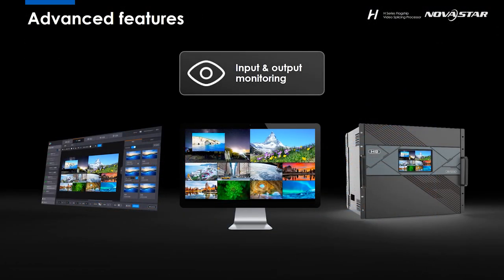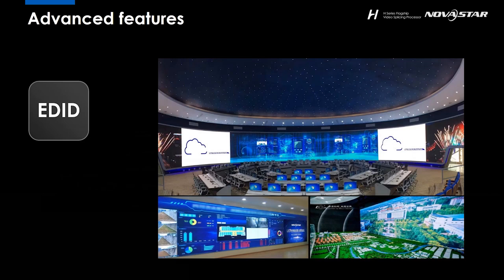Now let's move on to the monitoring function, which is quite commonly seen among different video controllers. Monitoring through hardware can only cover the output side, while IP monitoring can do overall monitoring. But most manufacturers do either one or the other — rarely does someone put both in one piece of equipment. But right now, it happens in our H series. Being able to see real-time images of both input and output sources is indeed a very considerate and convenient function for operators. And now let's talk about EDID. User-defined resolution is necessary for some ultra-long screens, but some suppliers don't support that. Our H series can do a great job in EDID setting, especially when a screen is ultra-long.